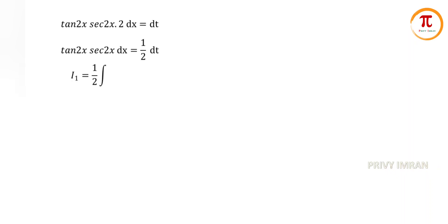Now my next step can be written as I1 is equal to 1 by 2 into integration of t squared dt. Now if I apply integration, then I1 can be written as 1 by 2 into t cube divided by 3 plus c.